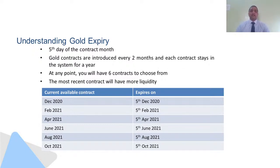This is just to give you a simple understanding of how the expiry of contracts happens on the MCX platform. For instance, if you are trading in a February 2021 contract, the expiry of that contract would happen for February 2021. Similarly it goes for April, June, August and October. At one point in time you will have six contracts to choose from, but one point to keep in mind is that the most recent contract will have much more liquidity compared to other contracts.